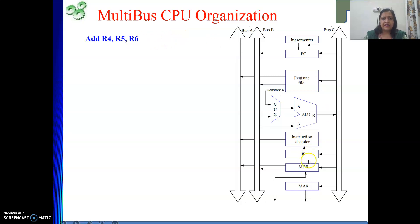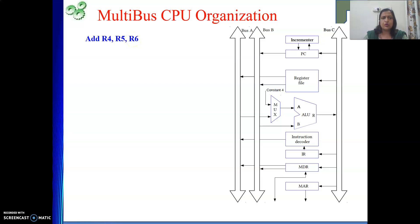In this diagram, where are R4, R5, R6? They belong to this register file only. To get the content of R4 and R5, we need not go to memory. Always remember, registers are part of the CPU. R6 is also part of the CPU, so the result will be stored in R6 — for that also, you need not go to memory.